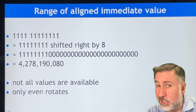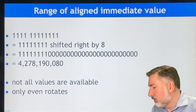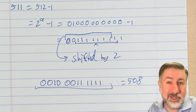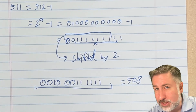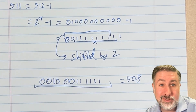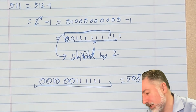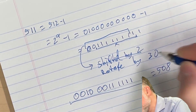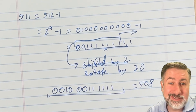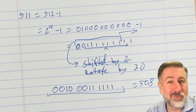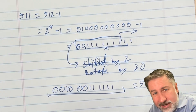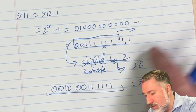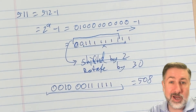Now there's one further complication I didn't mention because it's very frustrating — it makes me angry every time I think about it. What we find when we actually do this is that we're not shifting to the left, we're rotating to the right. So we're not rotating by 2, we're rotating by 30 — because we go to the right instead of the left. If we go all the way around to the other end and want to come back to our target position, we're actually rotating right by 30.